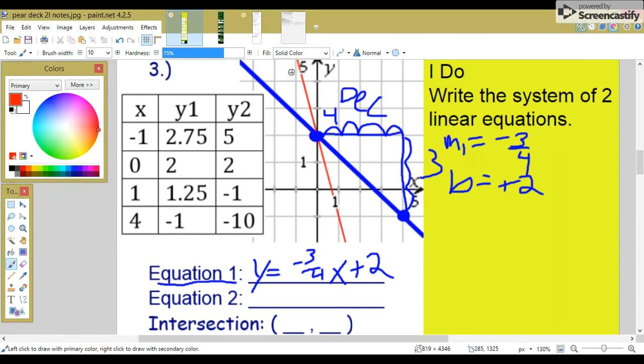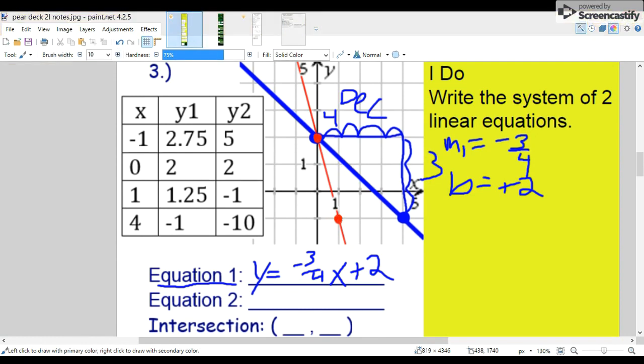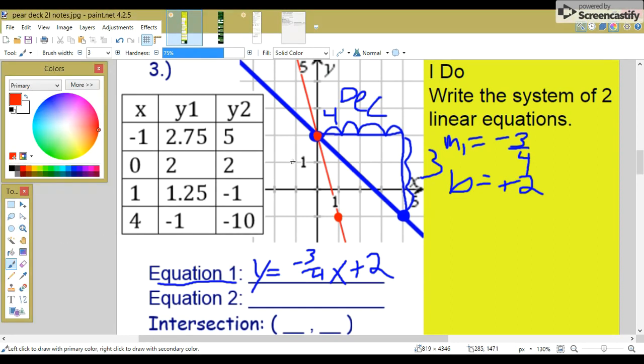Let's find the second equation. We have a lattice point right there, and a lattice point right there. Let's draw our triangle. It rises one, two, three, and it runs one.